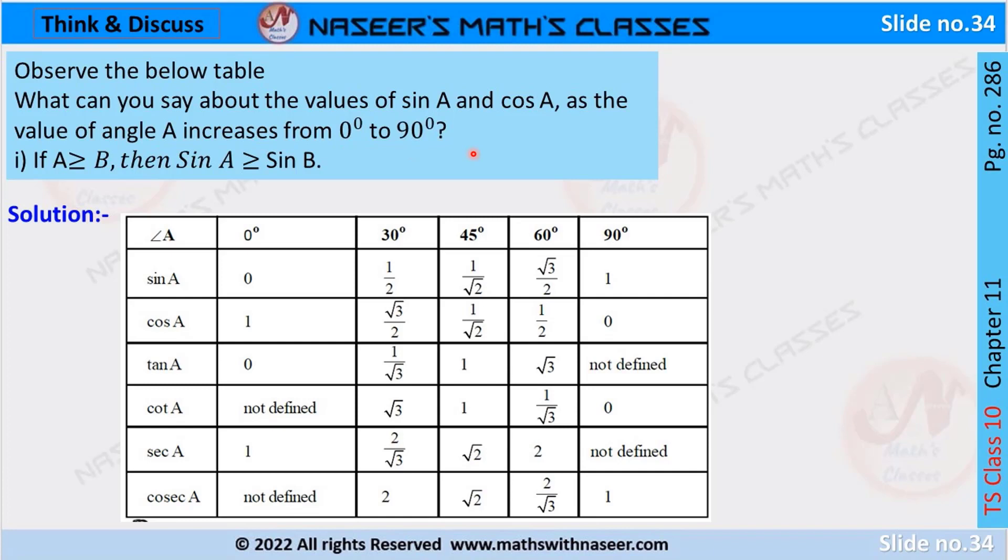As angle A value increases from 0 degrees to 90 degrees, then sin values also increases from 0 to 1. And as angle increases from 0 to 90 degrees, then cos A value decreases from 1 to 0.